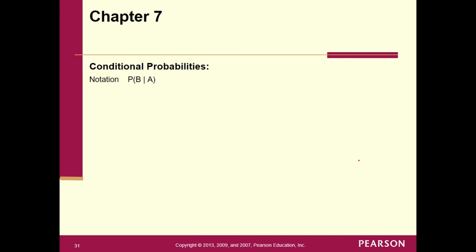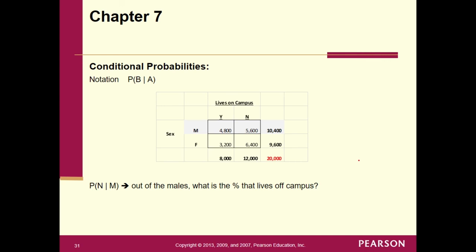Let's look at P(N|M) — the probability of living off campus given male. Given male, we look only at the 10,400 males. Out of those, 5,600 live off campus. So 5,600 ÷ 10,400 = 0.538, or 53.8%. Also, P(M|N): given that we know the person lives off campus, we look only at the 12,000 off-campus students. Out of those, 5,600 are male: 5,600 ÷ 12,000 = 0.467.